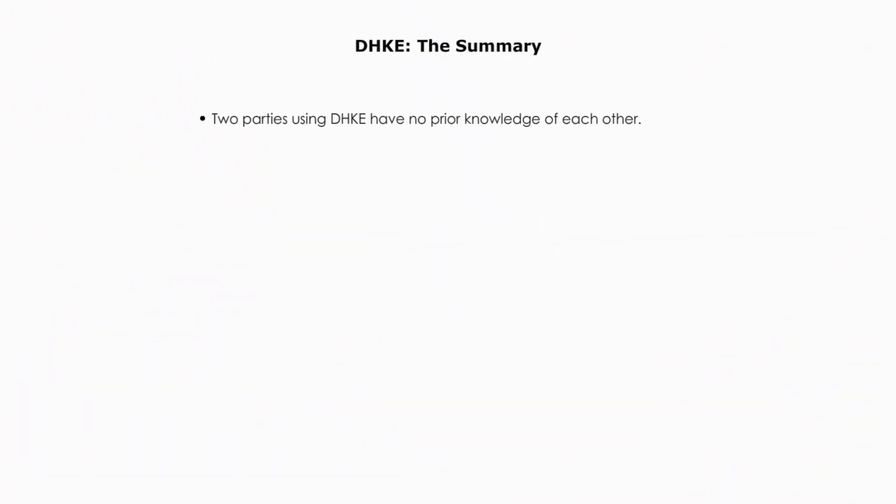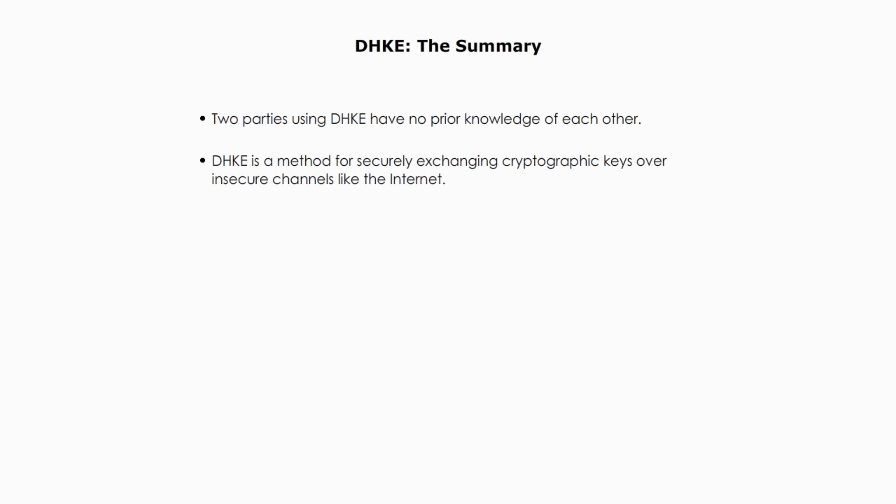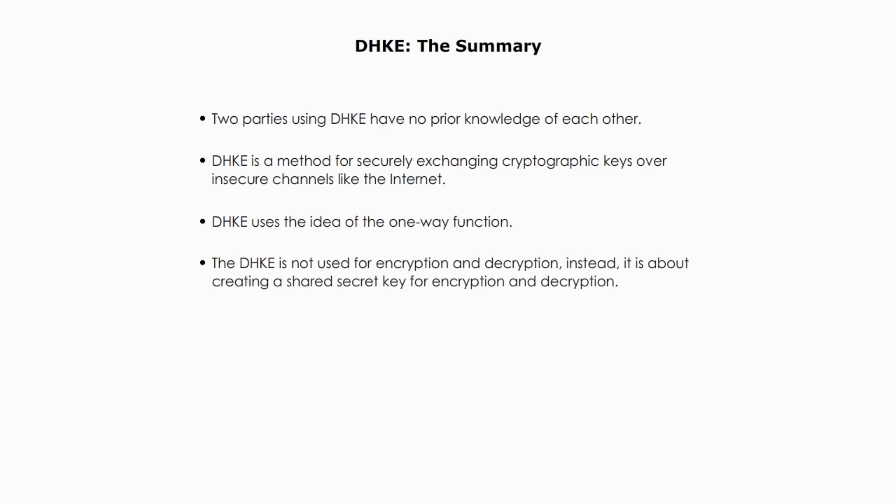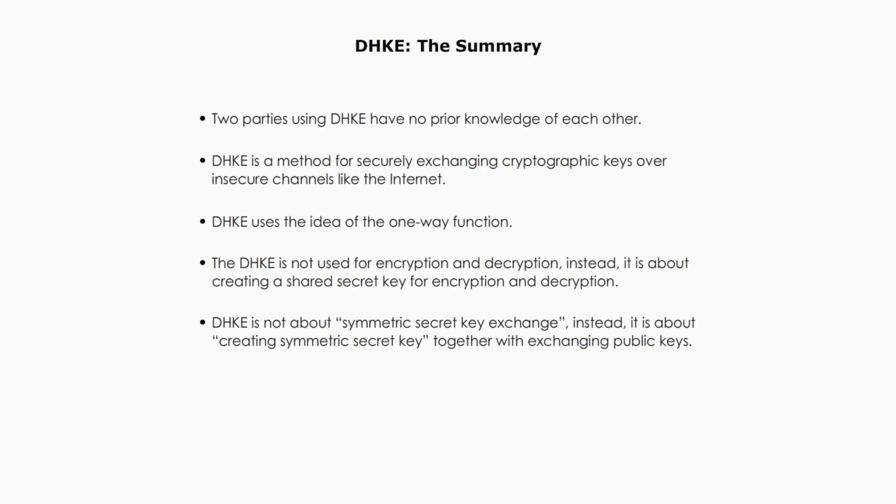In summary, these two parties have no prior knowledge of each other. DHKE is a method for securely exchanging cryptographic keys over insecure channels like the Internet. DHKE uses the idea of a one-way function — we can easily mix the colors and obtain a new color, but the opposite operation is almost impossible. There is no way to separate the mixed colors back to the original color components. DHKE is not used for encryption and decryption; instead, it is about creating a shared secret key for encryption and decryption. DHKE is not about symmetric secret key exchange; instead, it is about creating a symmetric secret key together by exchanging their public keys.